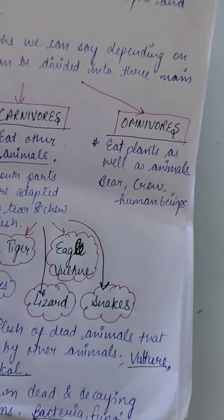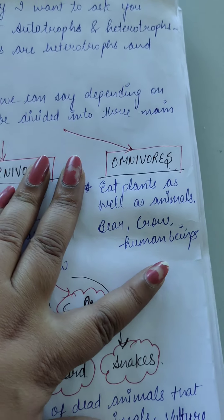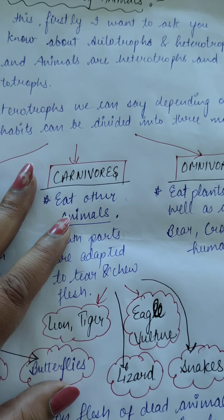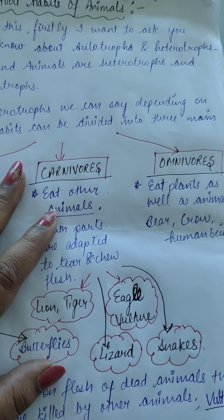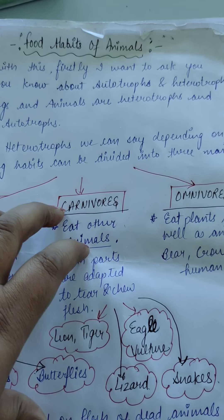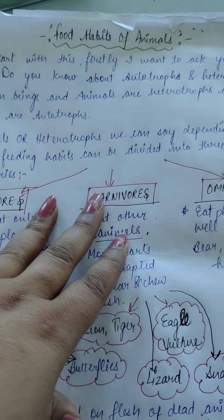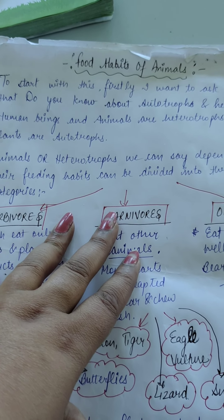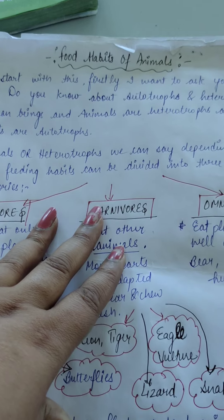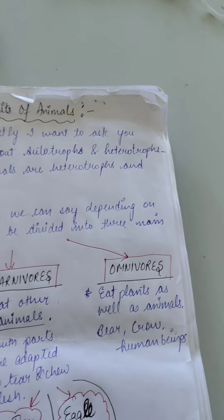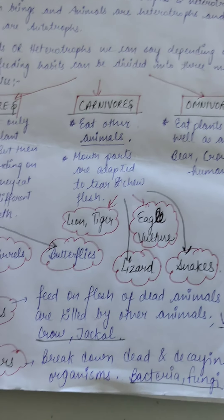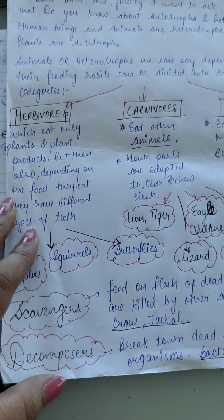The last category is omnivores — organisms that eat both plants and animals. These include bears, crows, dogs, cats, and human beings. Their mouth structure includes all types of teeth: incisors to cut food, sharp and pointed canines, and molars and premolars to chew food — because they eat all types of food.